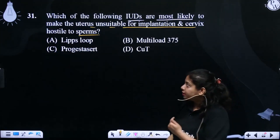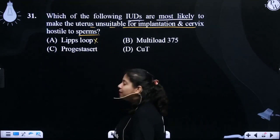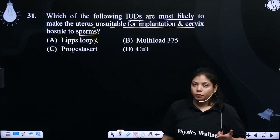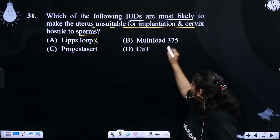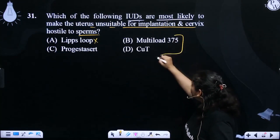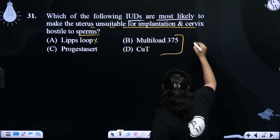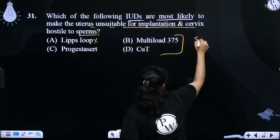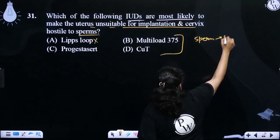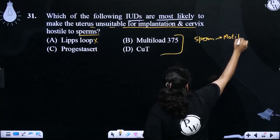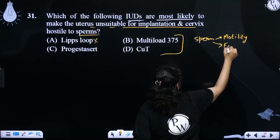Which part of the uterus will be altered? Is it a lipase loop or not? The lipase loop causes phagocytosis of sperm. This is the same as copper-containing IUDs, which affect sperm motility and fertilizing capacity.